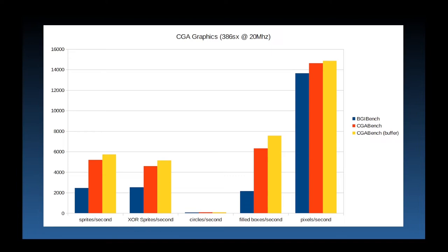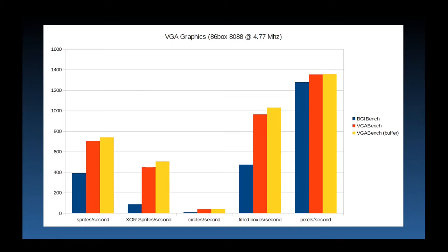Drawing to a memory buffer instead of video memory has a much smaller speed advantage for CGA. My theory is there is less data going to video memory, resulting in a smaller change. XT-class machines with an 8088 are really the reason I'm writing the new graphics library, so performance here matters more. VGA performance on the 8088 is significantly faster — especially the XOR image copy, which is more than four times faster.